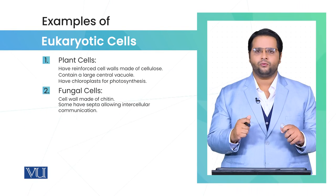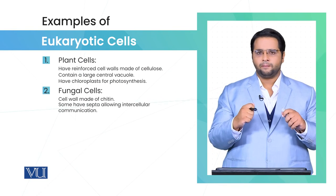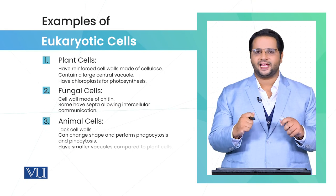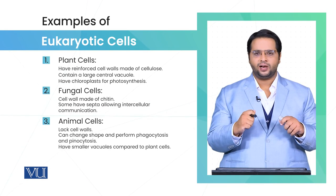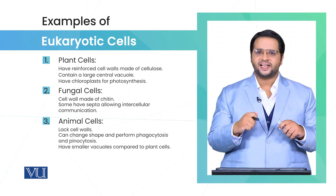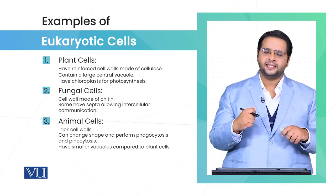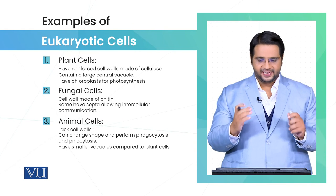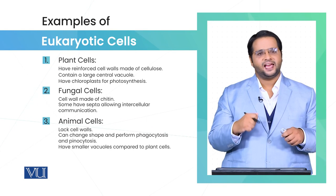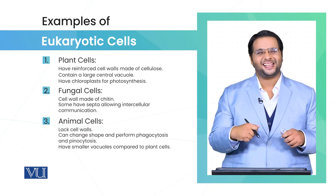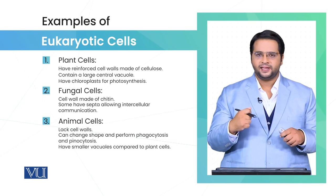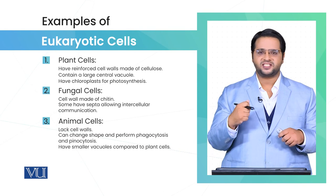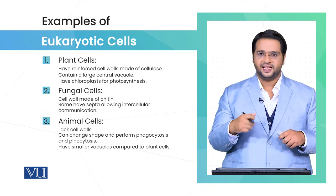Moving on, we are going to mention the third example, which is the animal cell. The animal cell lacks the cell wall, which is present in the plant cell and the fungal cell. In addition to that, the animal cell can change its shape and perform the processes of phagocytosis and pinocytosis.